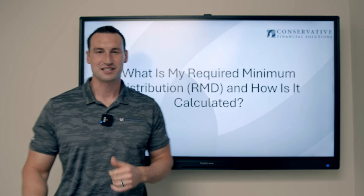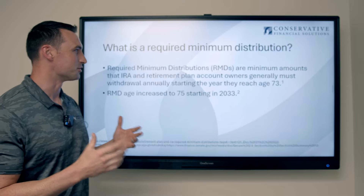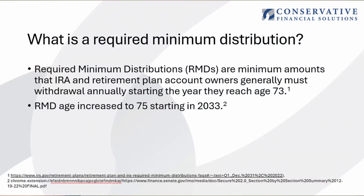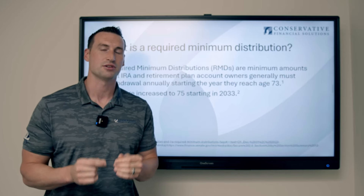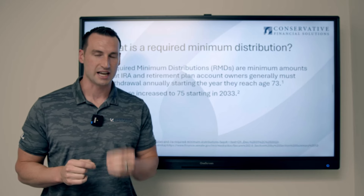First things first, let's talk about what your required minimum distribution is. A required minimum distribution, or RMD, is the minimum amount that an IRA or retirement plan account owner generally must withdraw annually, starting the year they reach age 73. Right now, age 73 is that required minimum distribution age.